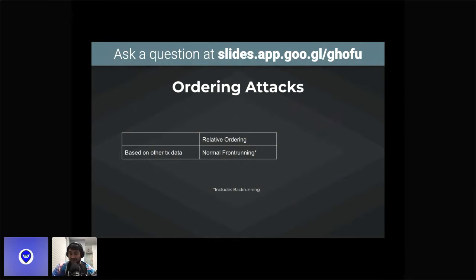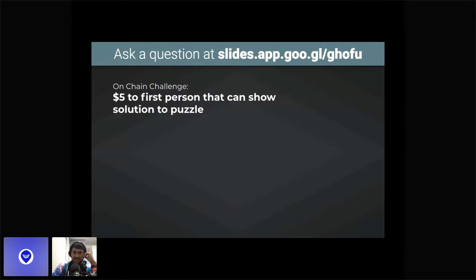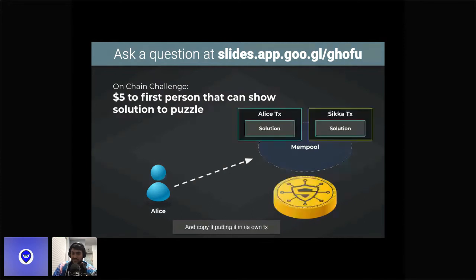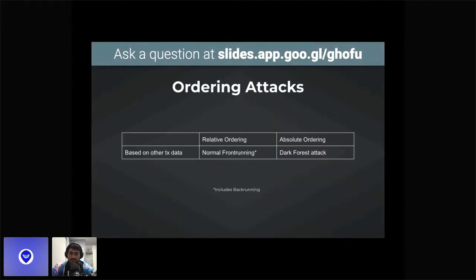Another attack enabled by reading transaction data is the dark forest attack, a term from a blog post by Dan Robinson and Georgios. Imagine an on-chain puzzle: whoever submits the correct solution gets five dollars. Alice figures out the solution and sends her transaction to Sika, the proposer. Sika, being evil, copies Alice's solution into its own transaction and guarantees its transaction is first in the block — stealing the reward without doing any of the work.